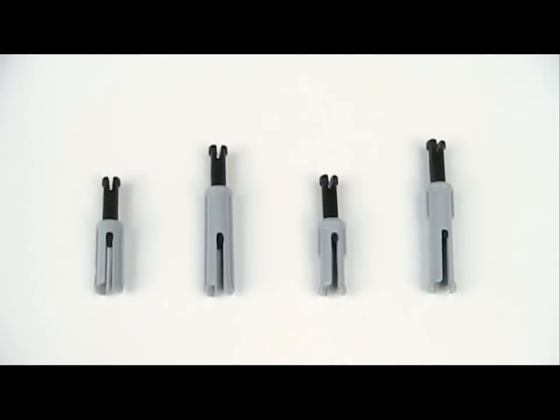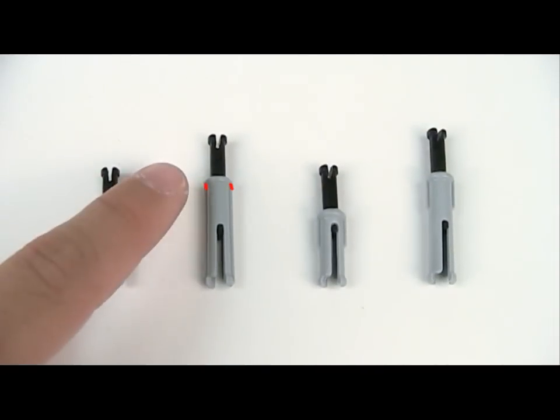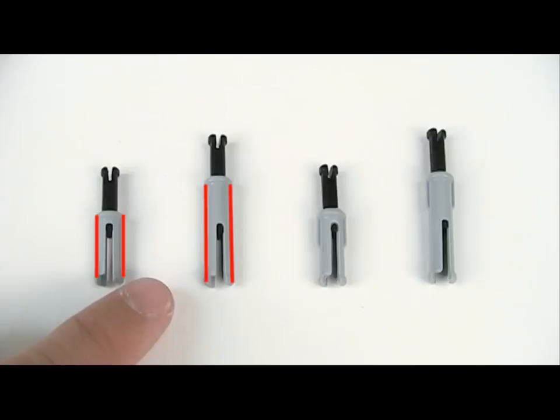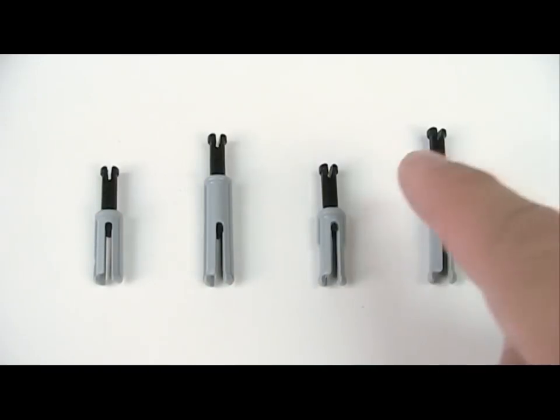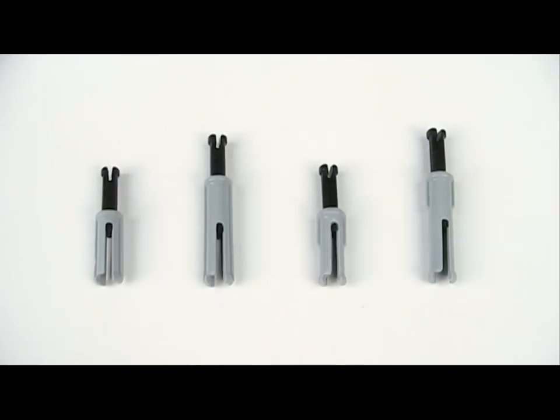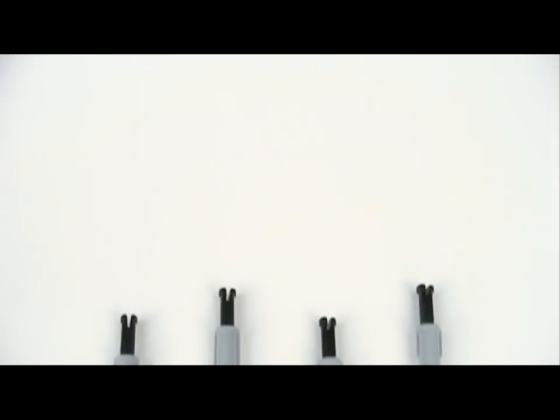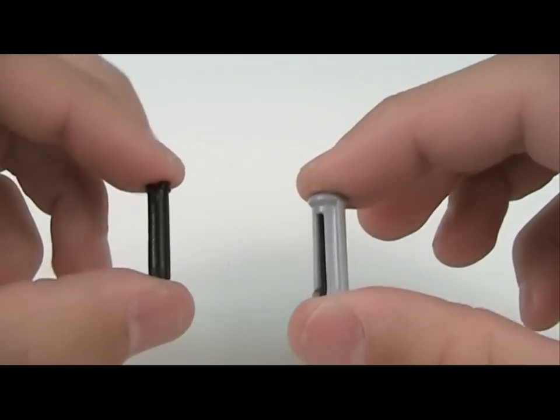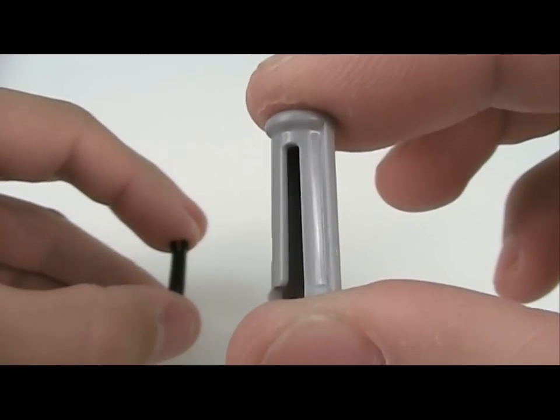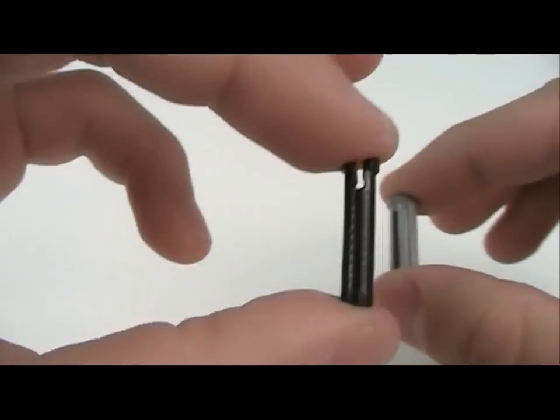Take note how the locking connectors have a rib running down the entire length of the body. There is only a partial rib on the rotating connectors. This allows two pieces to be joined together but leaves them free to rotate. All variants consist of an outside gray body and an inside black core.